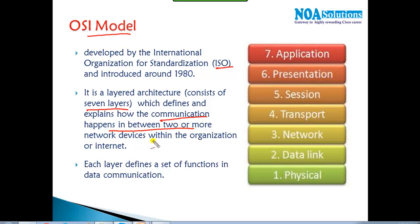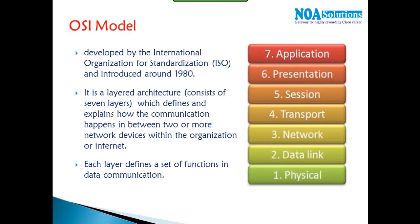Communication can be within an organization or over the internet. The seven OSI layers are: Physical, Data Link, Network, Transport, Session, Presentation, and Application. Each layer defines a specific set of functions describing what happens inside your network.